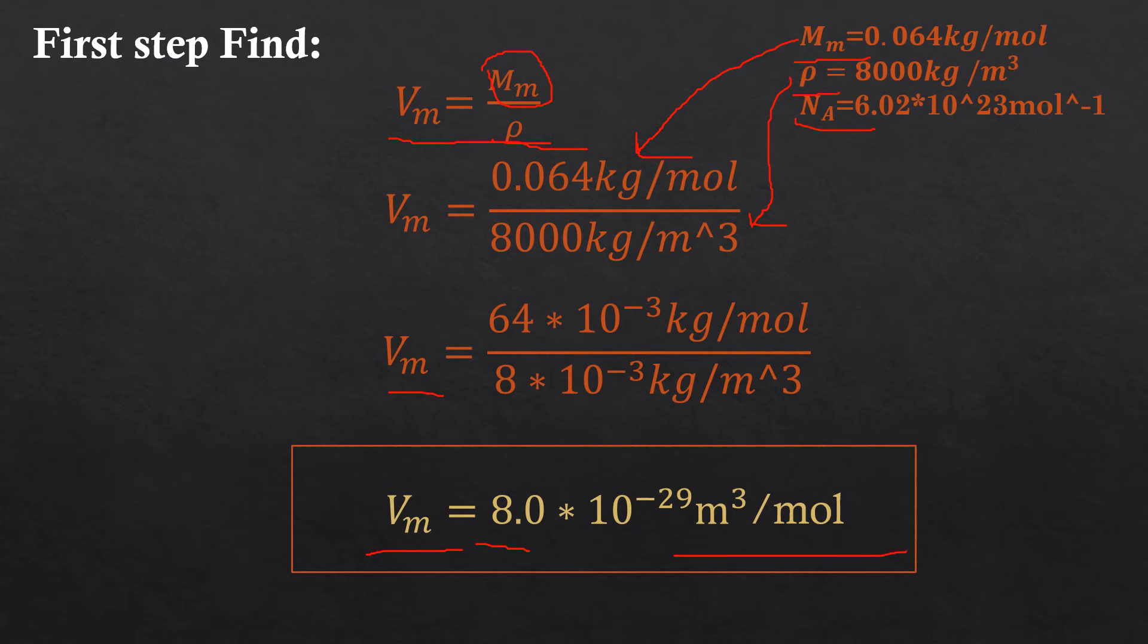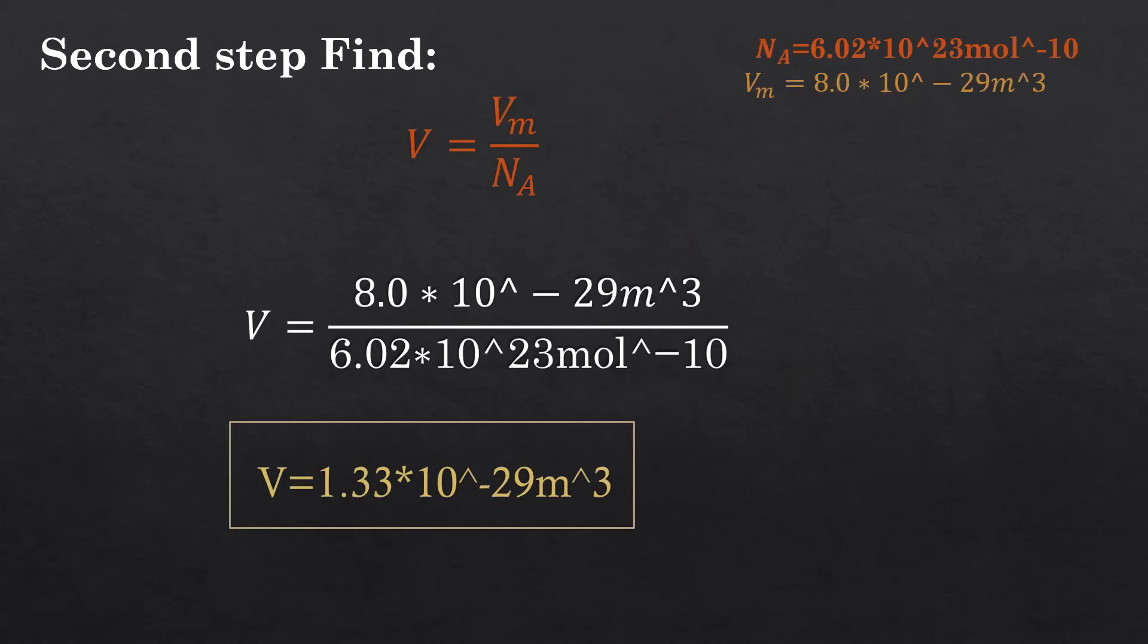Students, that was the first step. Second step: find V, which is volume. Here we have Avogadro's number, put it here, and we have molar volume, put it here. It's easy—just divide using a calculator. Divide molar volume by Avogadro's number, and your volume equals 1.33×10⁻²⁹ m³.